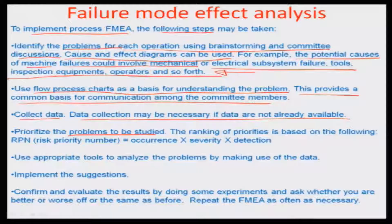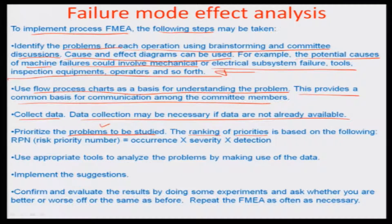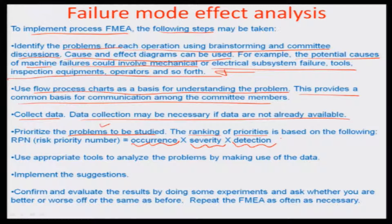Then you prioritize the problems. Once you have identified the problems you prioritize them, and the priorities are based on rankings done by those personnel involved at the process level. The rankings basically mean that you will rank how frequently the problem happens, how severe the problem is, and how difficult or easy it is to detect the particular problem. Then you multiply the ranks together to formulate something known as the risk priority number.